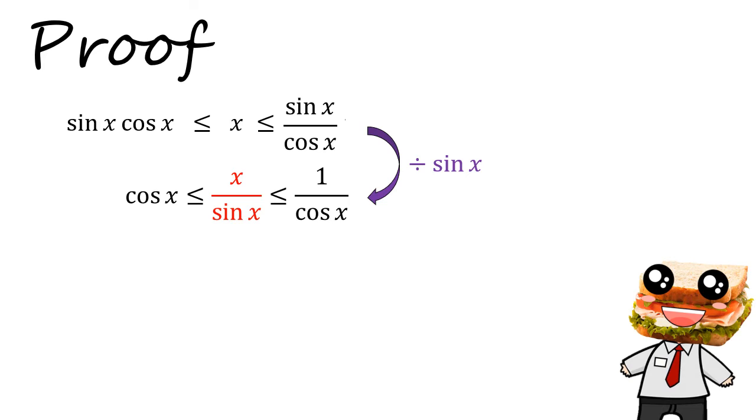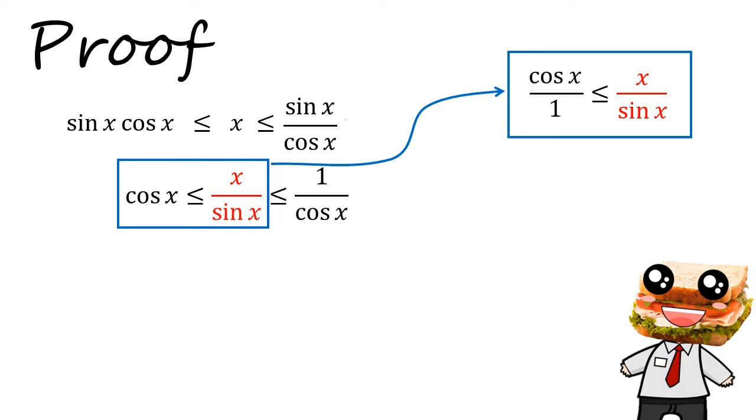You can see that in the middle of this inequality, we almost have it. We have x over sin x instead of sin x over x, meaning that we need to flip this inequality. So let's do this slowly. So first let's look at the first two terms. Cosine x is less than or equals to x over sin x. Now what we can do is we can multiply by sin x on both sides and divide by cosine x on both sides.